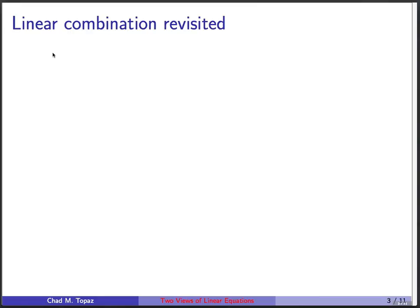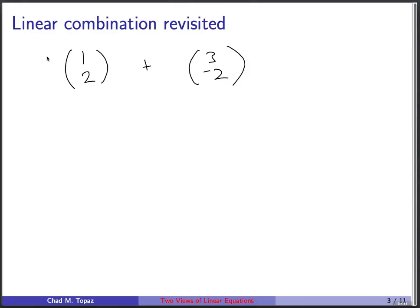You learned before that linear combination means that if you have two vectors, you do something like multiplying each one by some constant and then adding them together. This is a linear combination of these two vectors.